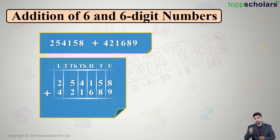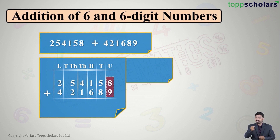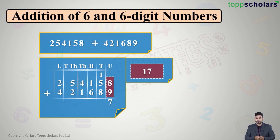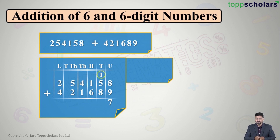In the units place we have eight plus nine. What is the answer, my dear students? It is 17 — a two digit number. So we write seven under the units column and one will get carried forward to the tens column. Now let us focus on the tens column.